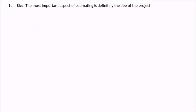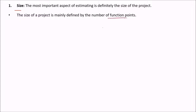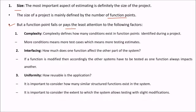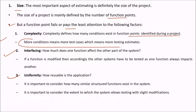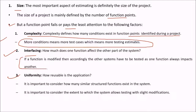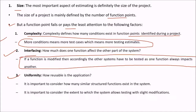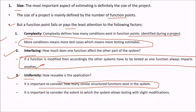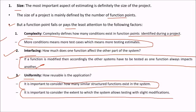The most important aspect of estimating is defining the size of the project, mainly defined by the number of function points. However, function points pay the least attention to the volume of tests involving complexity, interfacing, or uniformity. Complexity defines how many conditions exist in the function points — more conditions means more test cases and more testing estimation. Interfacing means how much one function affects other parts of the system; if a function is modified, other parts must be tested. Uniformity means how reusable the application is and how many similarly structured functions exist.